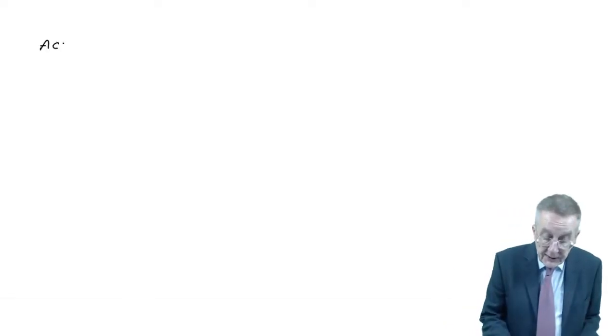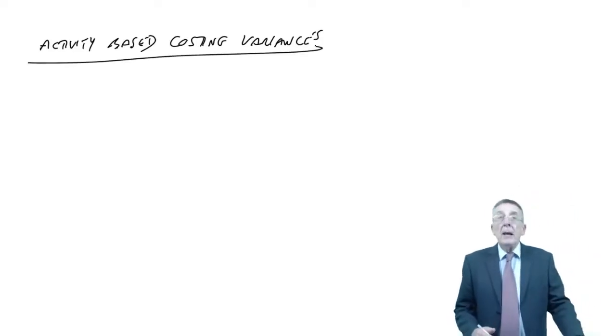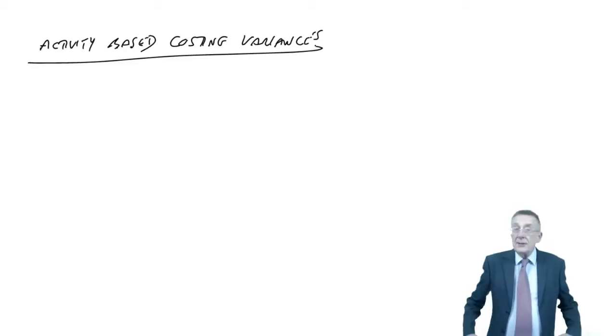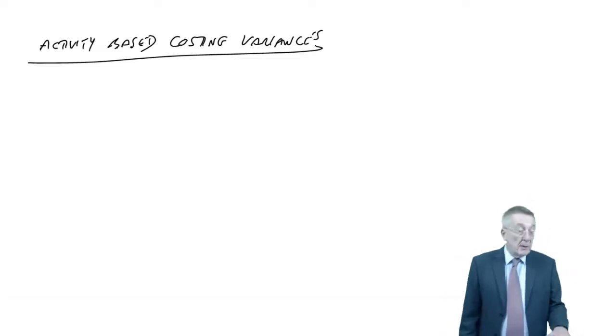The last one is activity-based costing variances. Now, this sounds as though it's going to be very challenging. In fact, to the level it's asked in the exam, or was asked in the exam, it isn't at all. It was only asked once, and it was exactly the same level as in my example six, which I'm about to go through.